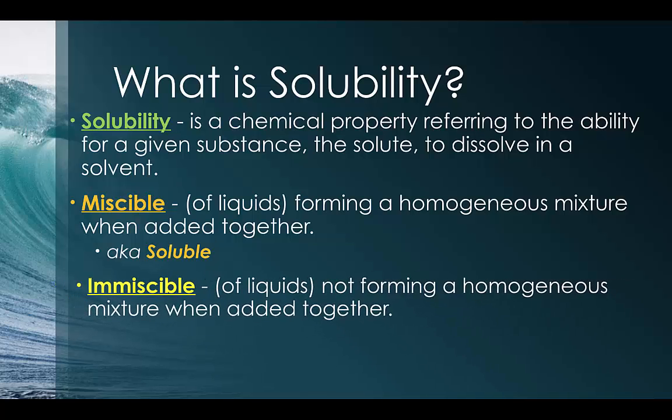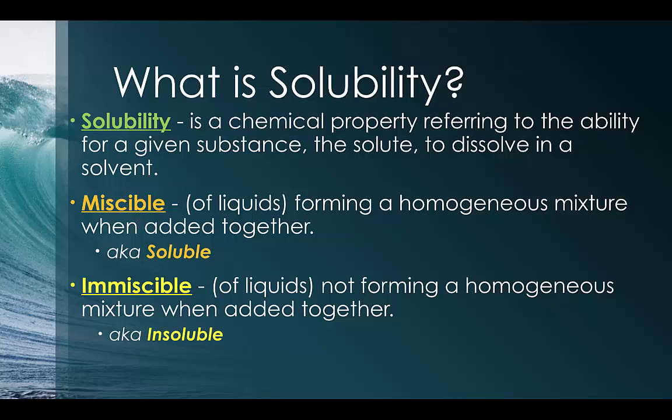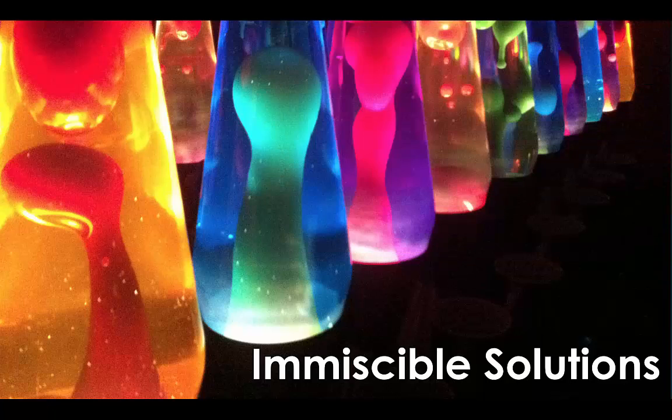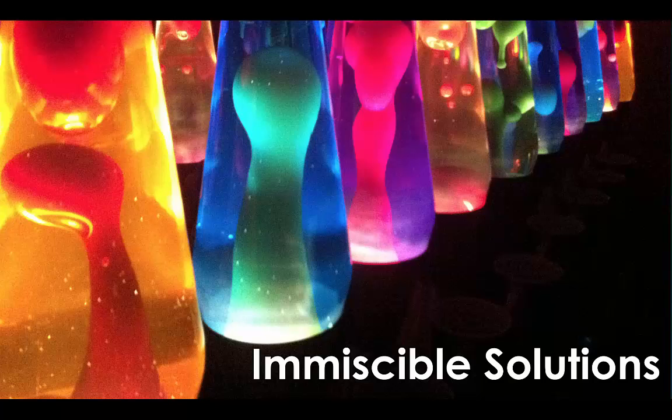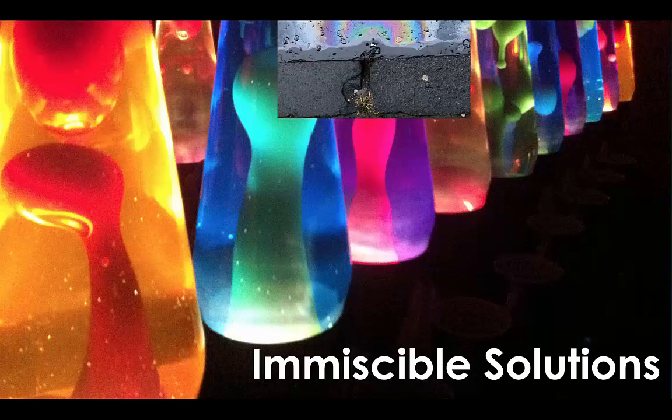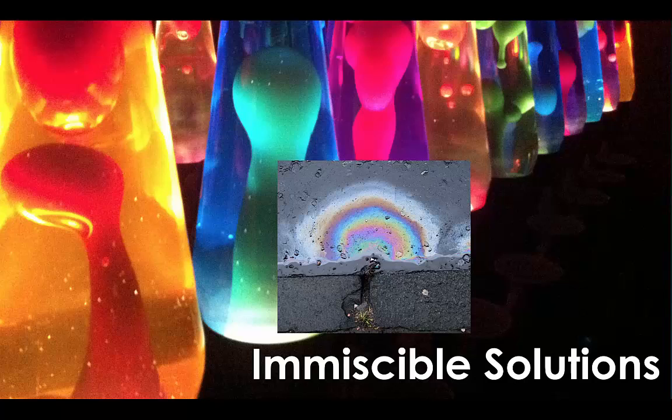But if you are mixing two fluids together and they are insoluble, we call them immiscible. So here are some examples of immiscible solutions. As we all see, these are lava lamps, and lava lamps are great examples of immiscible solutions. Also, anytime you're outside in a parking lot on a rainy day and you look down and you can see that rainbow, that rainbow effect is the immiscible solution between the polar water and non-polar gasoline.